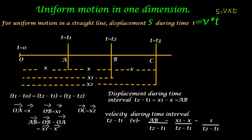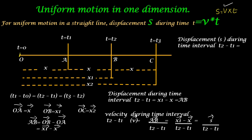Velocity during time interval t2 minus t1 equals AB divided by (t2 minus t1), that is displacement divided by time, which equals (x1 minus x) divided by (t2 minus t1). This equals S divided by (t2 minus t1) when the distance is large — S being the displacement vector. From this, the displacement S during time interval t2 minus t1 equals V multiplied by (t2 minus t1). Since t2 minus t1 equals time interval t, the formula becomes S equals V multiplied by t.